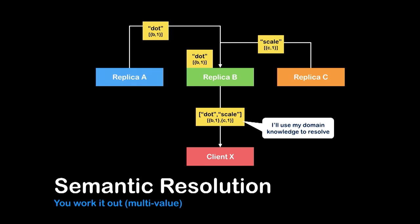Another strategy is storing multiple versions of the value and using some form of semantic resolution — using the semantics of the domain to define a path to that single value. An example being a union operation, where we take two different divergent copies and create a single consistent version. But this passes the pain onto the developer to build ad hoc resolution strategies for the use case at hand, and it can be tricky when it comes to certain data.